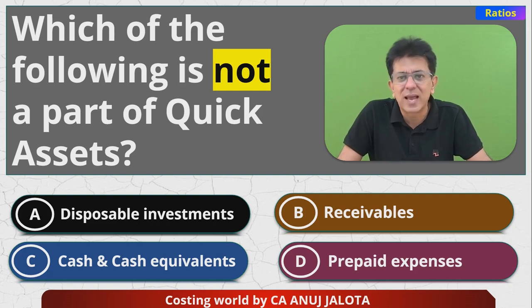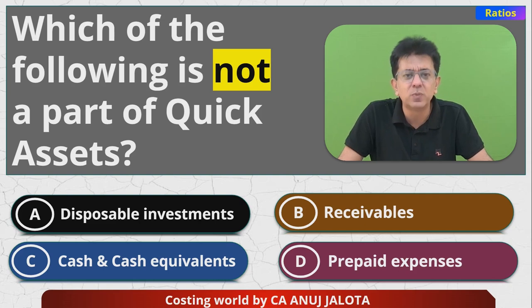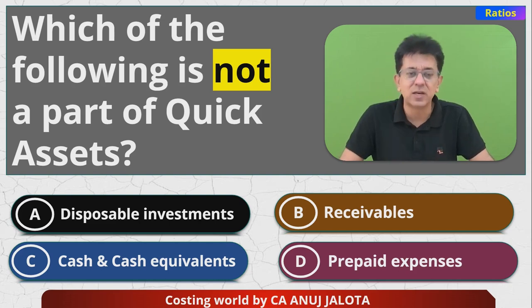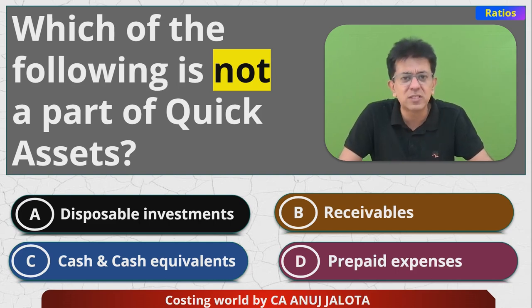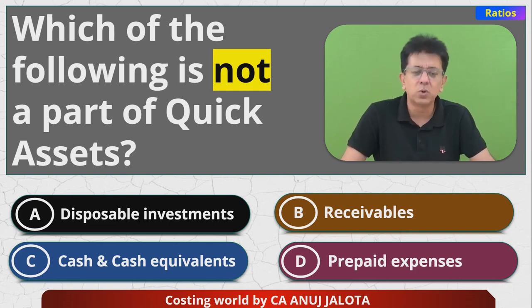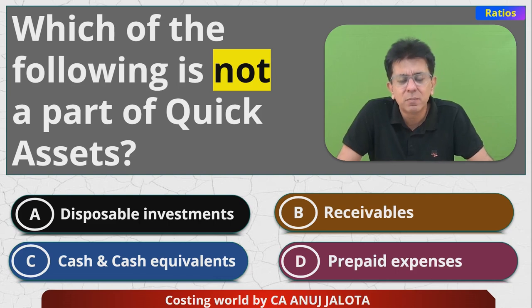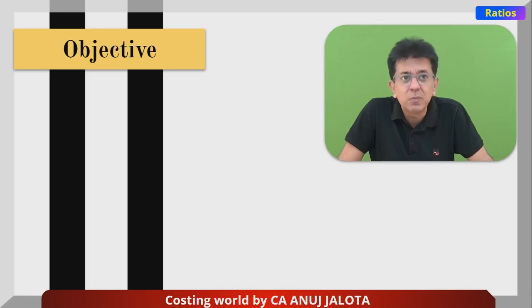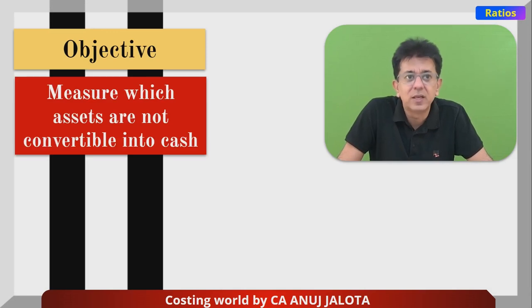Cash and cash equivalents — cash equivalents could be anything almost like cash: it could be bank balances, demand drafts, or some foreign exchange currency. These are almost like cash; you can go to the bank and get them converted into rupees. So the aim here is to find out which asset is NOT convertible into cash.